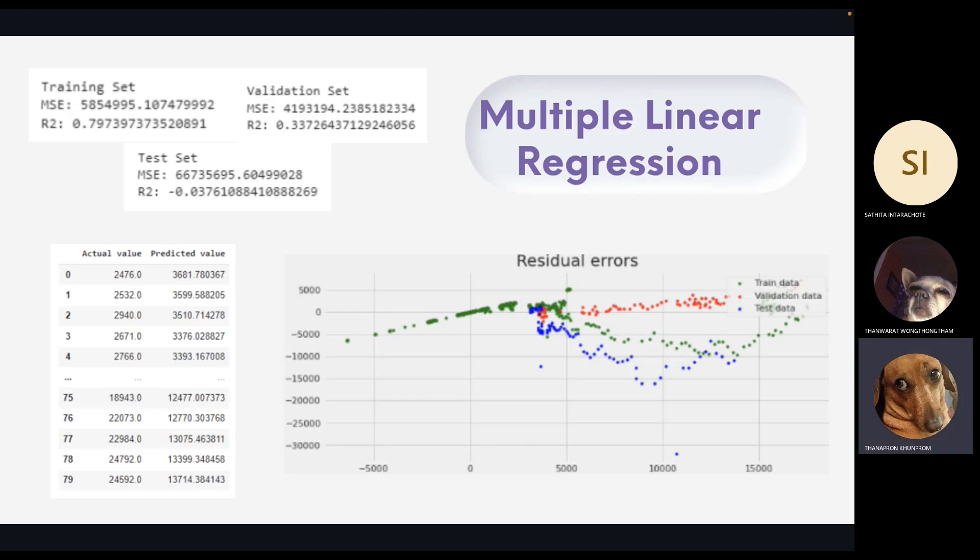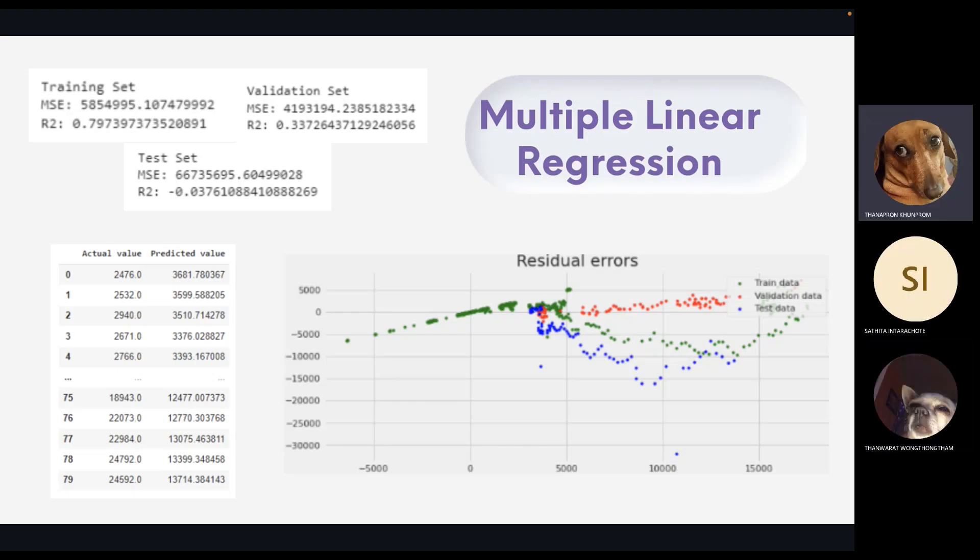And in this slide, here are the results of train test set evaluation that we try to evaluate in multiple linear regression. As can be seen, the performance of this model is not as good as we expect. When we see the value of mean square error, we think that there are other models that can work for time series data with better performance.